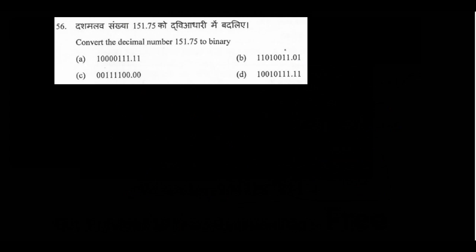Question number 56: to convert decimal 151 to binary, normally we divide by 2. But a quick method: write the powers of 2 — 1, 2, 4, 8, 16, 32, 64, 128. It can go up to 128 only because it is 8-bit data. Find which numbers add up to 151. 128 + 64 is more than 151, so 64 is 0.